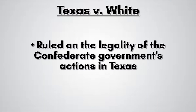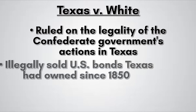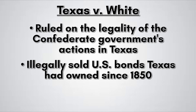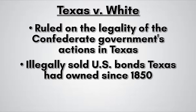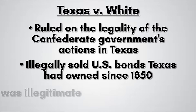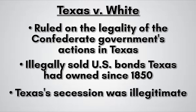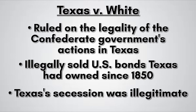In this case, the Supreme Court ruled on whether the actions of the government of Texas during the period in which the state seceded from the Union during the Civil War were legal. The Confederacy had illegally sold United States bonds that Texas had owned since 1850. The ruling essentially stated that Texas had been a state since it first joined the Union on December 29, 1845, and its secession was illegitimate, therefore its acts were still illegal.